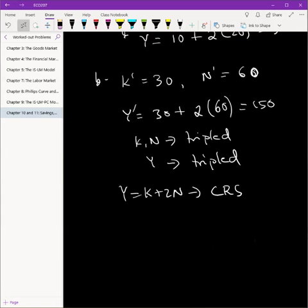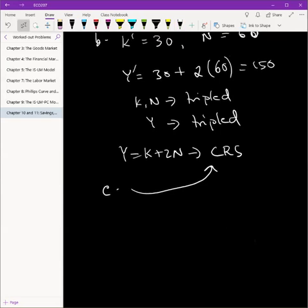That's part B. Part C is how would you qualify the return to scale? So this is actually part C we've already done. Part C is asking us how we would classify the returns to scale of this function. And as we talked about, that's constant returns.